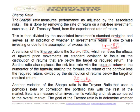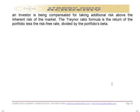Another variation is the Treynor ratio, which uses a portfolio's beta — the correlation of the portfolio with the rest of the market. Beta is a measure of investment volatility and risk as compared with the overall market. The goal of the Treynor ratio is to determine whether an investor is being compensated for taking additional risk above the inherent market risk. The Treynor formula is based on the return of the portfolio...